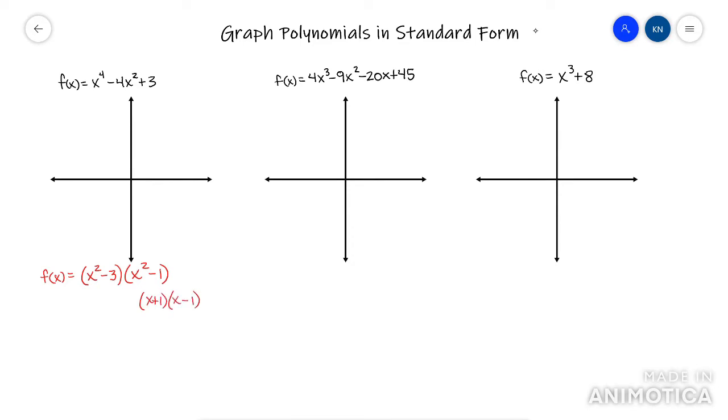But this x squared minus three, it's going to be weird. Basically, it's going to turn into x plus root three, x minus root three.